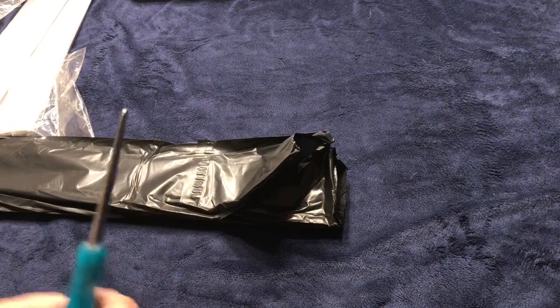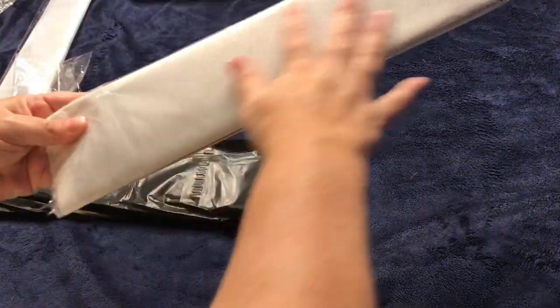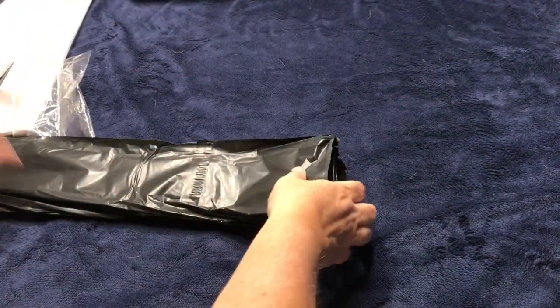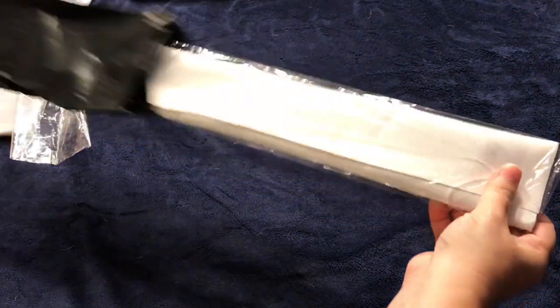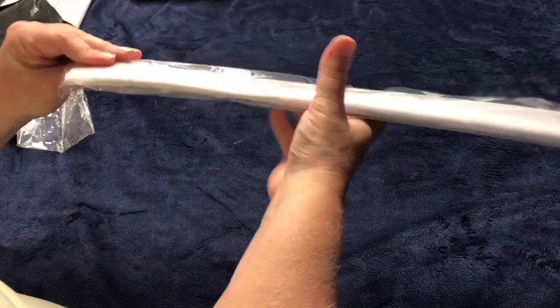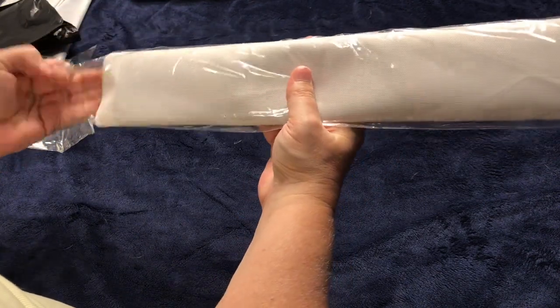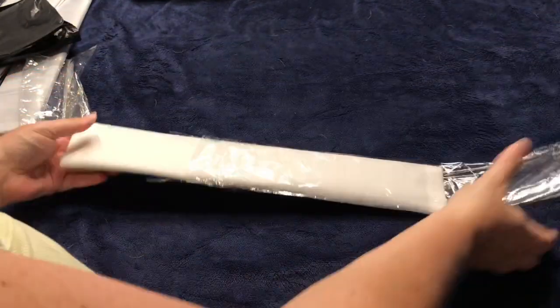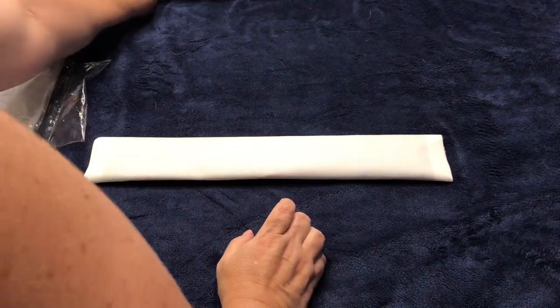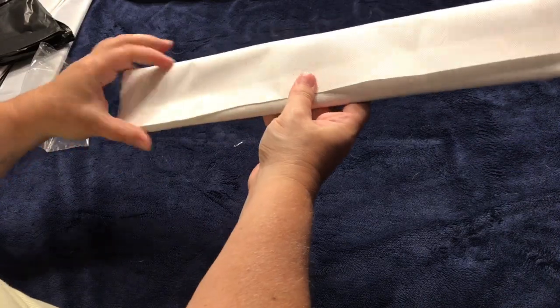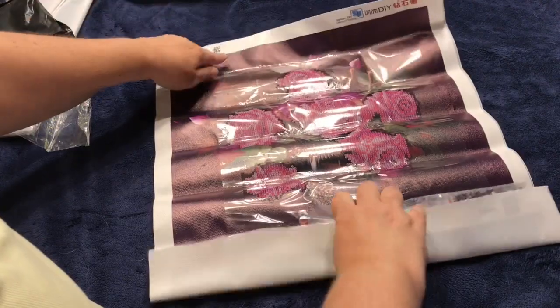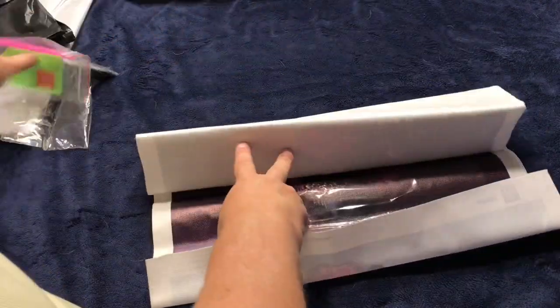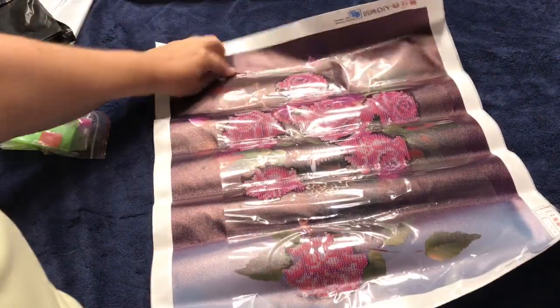This one came packaged a little bit different. All of them are in this clear covering, but for some reason this one's in a black covering. Does that mean it's made of gold? One could only wish. The same kind of canvas. All right, this is the same painting but this one is purple.